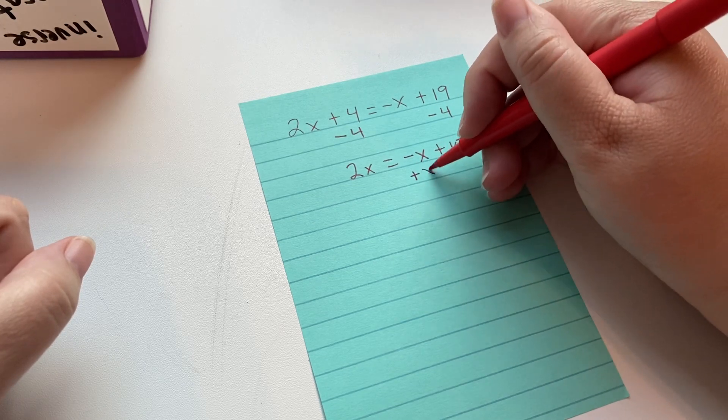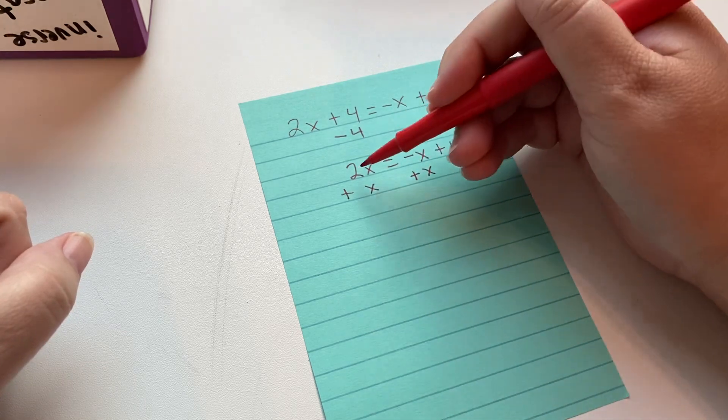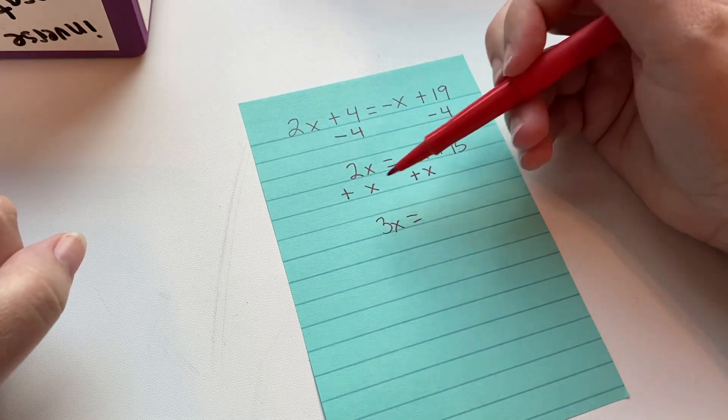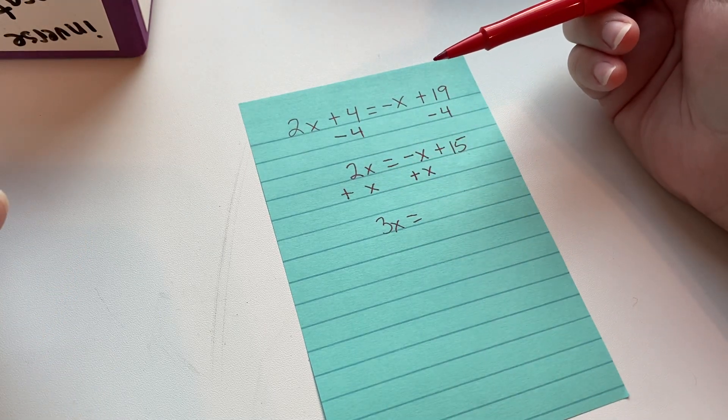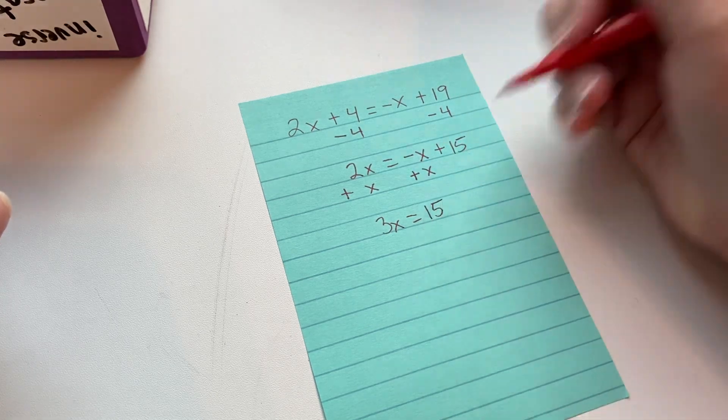So I'm just going to add an x and that makes zero. And then I'm going to add an x here. 2x plus 1x is 3x. So don't forget that when there's just 1x, it means 1x, even though there's not a 1 in front of it. And then on this side, we're left with 15.